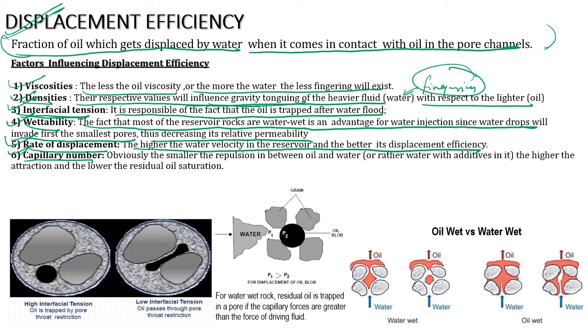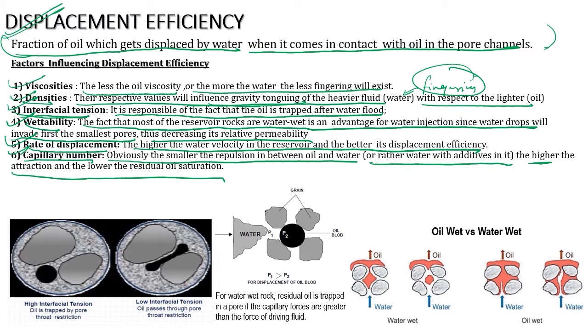Rate of displacement — the higher the water velocity in the reservoir, the better the displacement efficiency. Capillary number — the smaller the repulsion between oil and water, or water with additives, the higher the attraction and the lower the residual oil saturation.